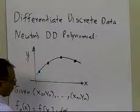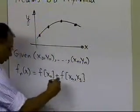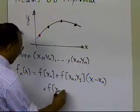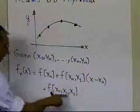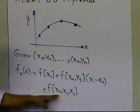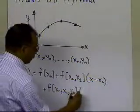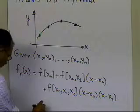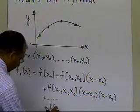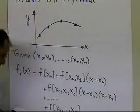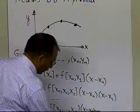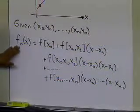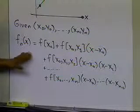The divided differences in square brackets are not the values of the function at those points — they are the divided differences, explained in a separate segment. The last part of the formula is the divided difference of x0 through xn, times (x minus x0) all the way up to (x minus x of n minus 1). That's how you find the nth-order polynomial through n plus 1 data points using Newton's divided difference polynomial.